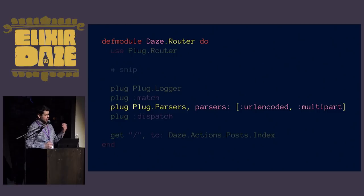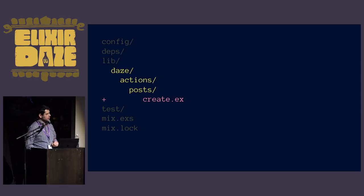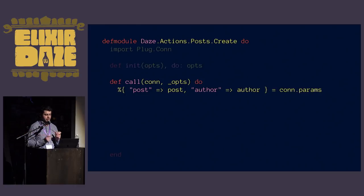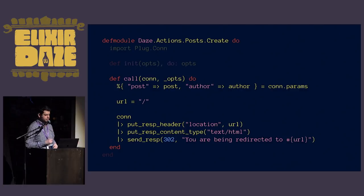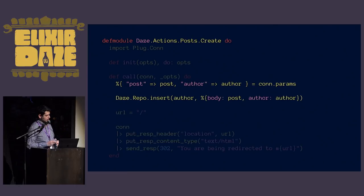Now that we can handle that, let's go ahead and add the route so we can create our post. We define the route, then define the module. We import Plug.Connection, define the init function, and use pattern matching to get the values we care about from conn.params. For the redirect logic, we grab the connection, put the response header for the location, put the content type, and send a 302 telling them they're being redirected to that URL.